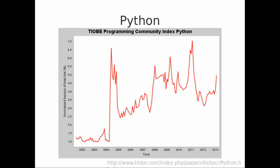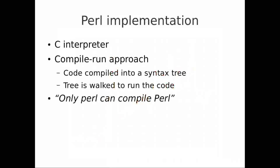So how is Perl implemented? There's an interpreter; it has a compile-run approach, so basically the code is compiled at runtime. Many people complain that only Perl can compile Perl, meaning there's no external compiler where you can take Perl code and compile it into, for example, bytecode that could be executed.